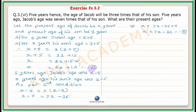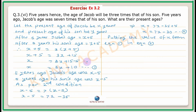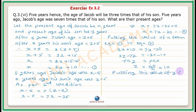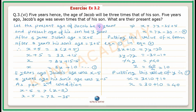Putting the value of x from equation 1 into equation 2: 3y plus 10 equals 7y minus 30. Solving: y equals 40 upon 4, equal to 10. Putting this value of y in equation 1: x equals 3 into 10 plus 10, so x equals 40. Answer: present age of Jacob is 40 years and present age of his son is 10 years.